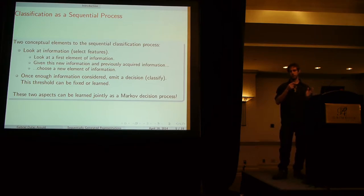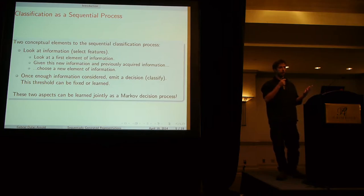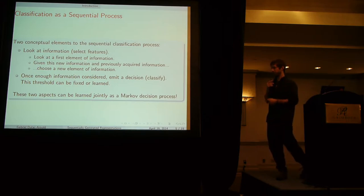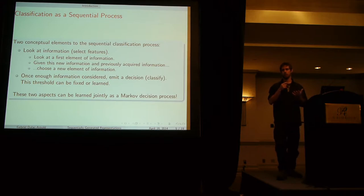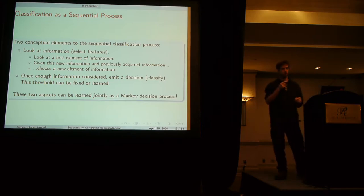You can also learn to do it more or less. Once you've acquired enough information either because of an outside constraint or because you've learned that it's enough information, then you can choose to classify. These two steps can actually be learned together in one total process described by a Markov decision process and solved by reinforcement learning or at least finding some sort of good policy.